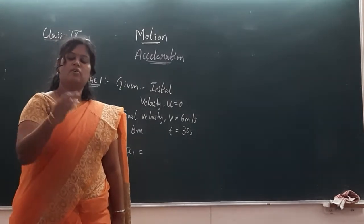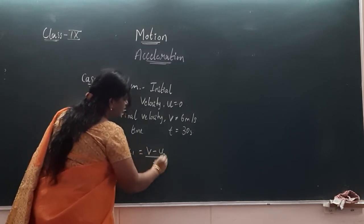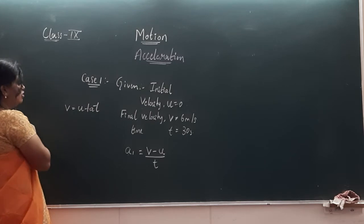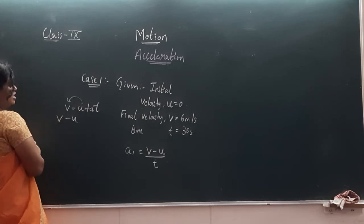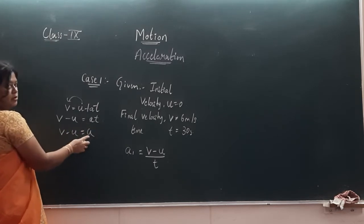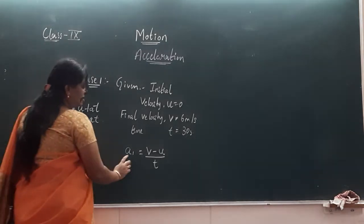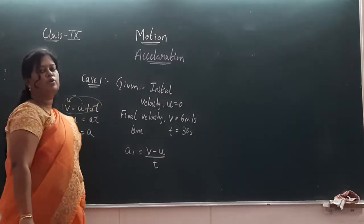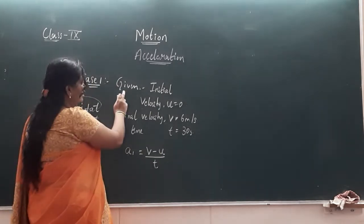So let us find the acceleration. What is acceleration? It is change of velocity — final velocity minus initial velocity divided by time. The formula is v = u + at. Taking u to the left side, it becomes v minus u = at. Dividing both sides by t, acceleration a equals v minus u divided by t. So for case 1, a = (v minus u) divided by t.